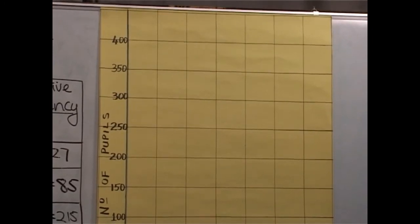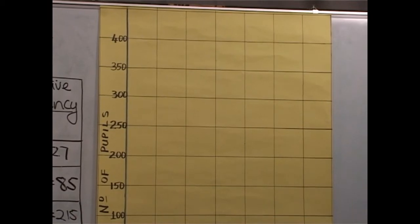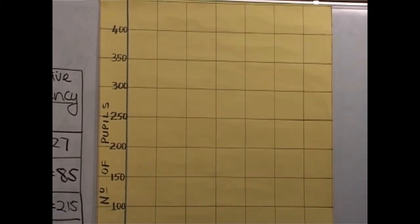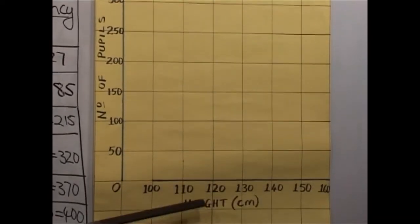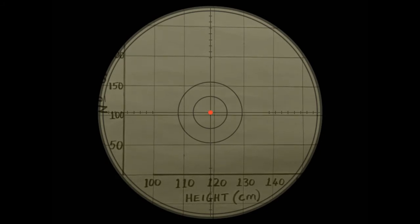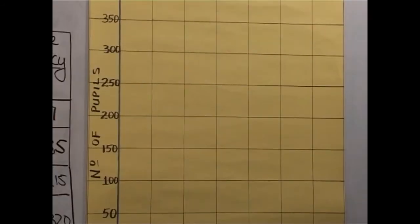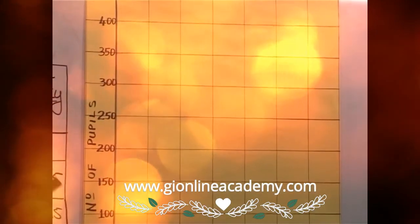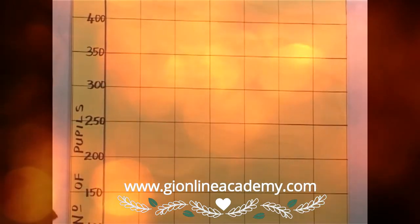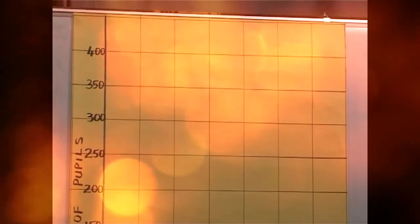We have the numbers ranging from 100 to 160. As I said, the height will be on the horizontal axis. The cumulative frequency will be on the vertical axis. So when you are drawing the cumulative frequency, you must label these axes. On the horizontal axis, I've indicated it represents the height in centimeters. On the vertical axis, you can either write cumulative frequency or number of pupils. This cumulative frequency is representing the number of pupils, and those can be used interchangeably.